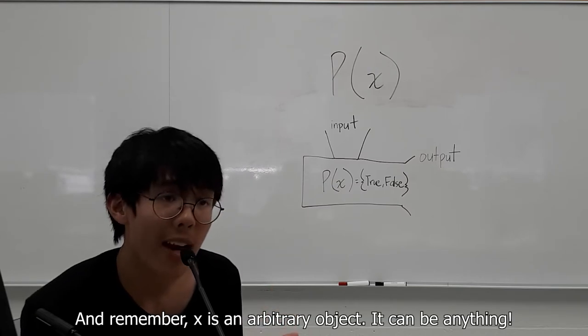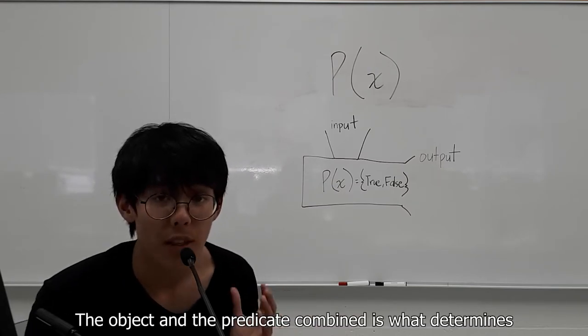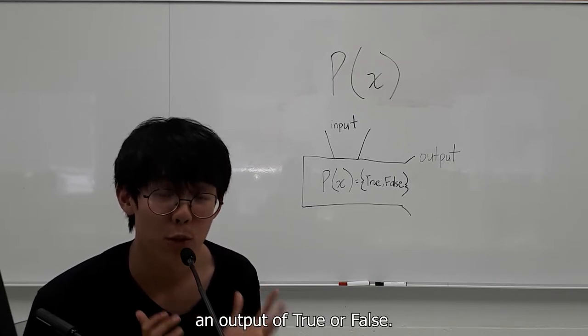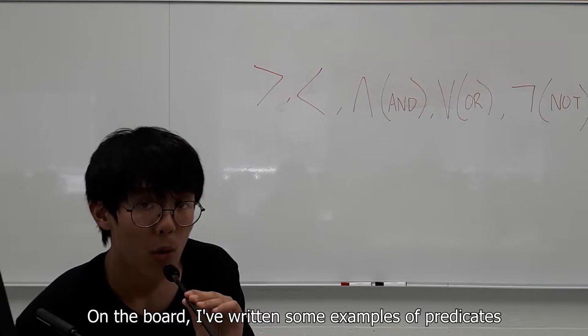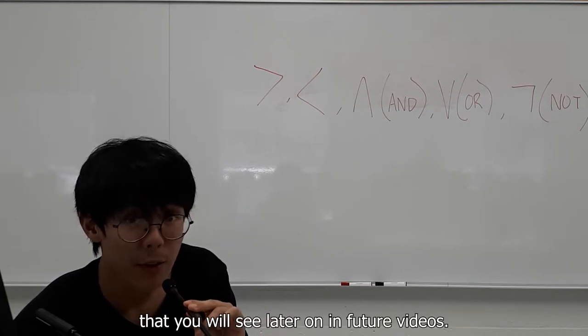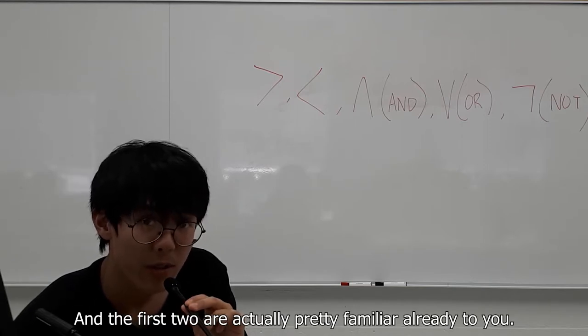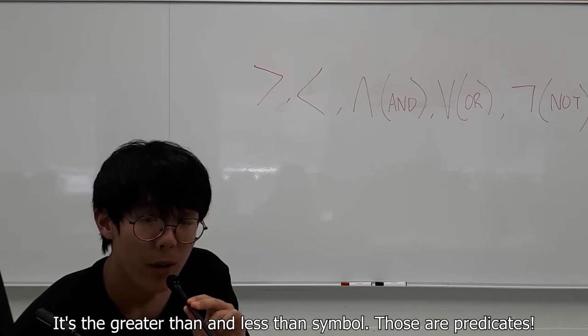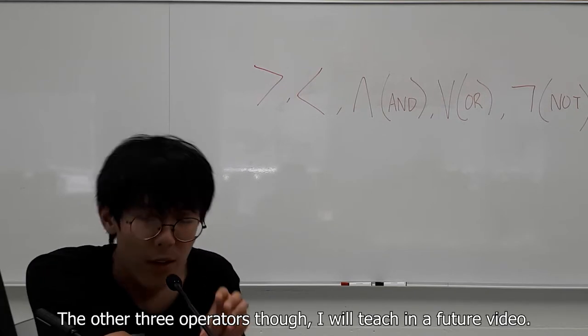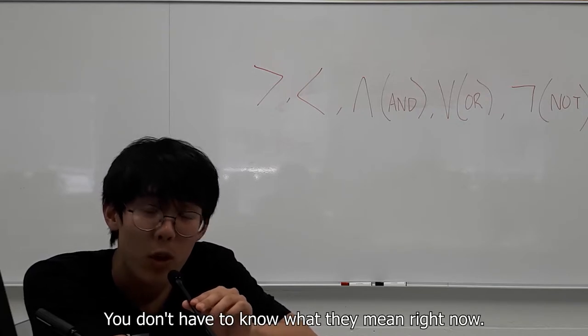And remember, X is an arbitrary object. It can be anything. The object and the predicate combined is what determines an output of true or false. So on the board, I've written some examples of predicates that you will see later on in future videos. And the first two are actually pretty familiar already. It's the greater than and less than symbol. Those are predicates. The other three operators, though, I will teach in a future video. You don't have to know what they mean right now.